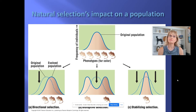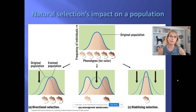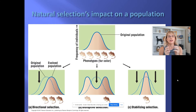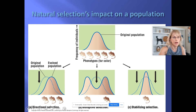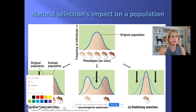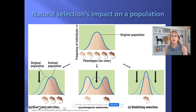We've been talking about evolution, and now I want to talk about how natural selection can affect a population. Most examples professors give about natural selection are things like if rabbits are slower they get eaten, and then the fox makes the population of rabbits faster over time. But that's actually only one way natural selection can have an impact. Let's look at the three different ways we can see natural selection act.